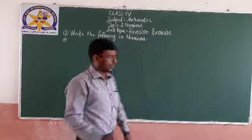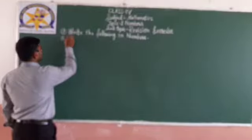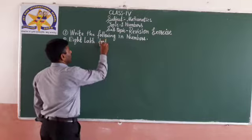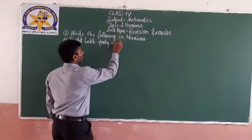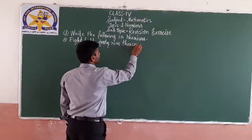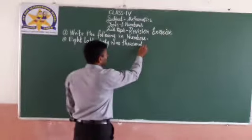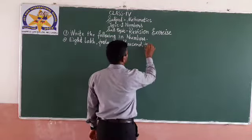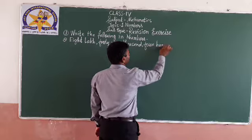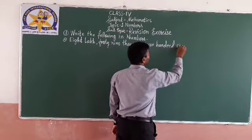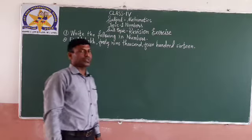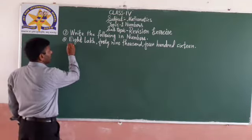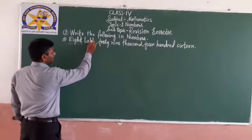Write the question: 8,49,416. In the answer, you will have to write the place values first — ones place, tens place, hundreds place, thousands place, ten-thousands place, lakhs place. First check the starting number, which is 8, and after 8, which place is there?